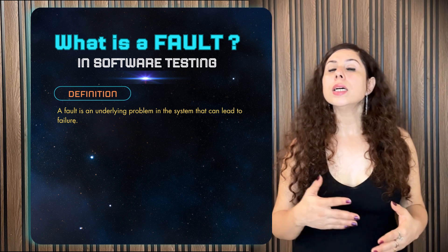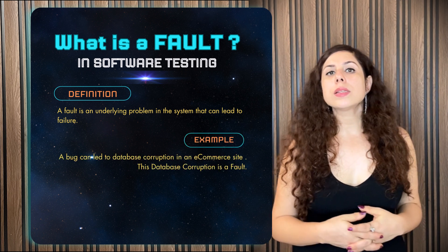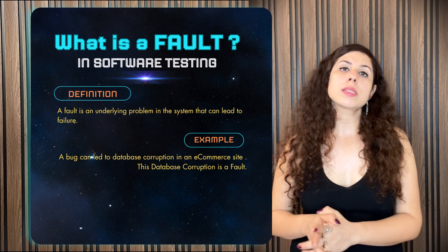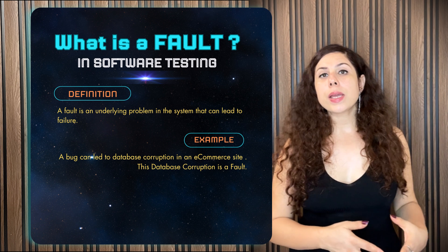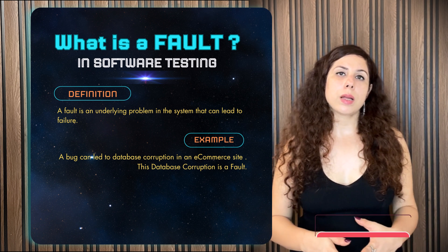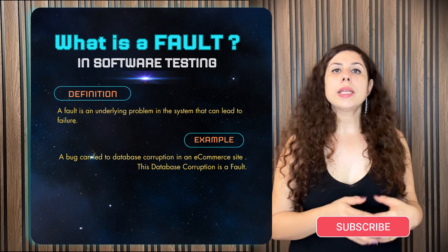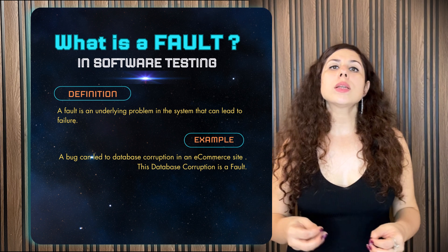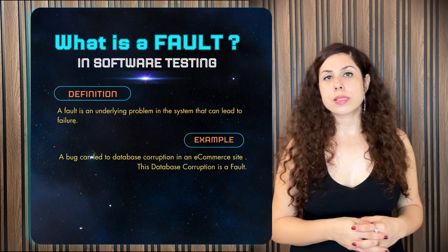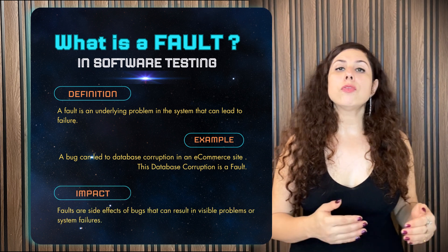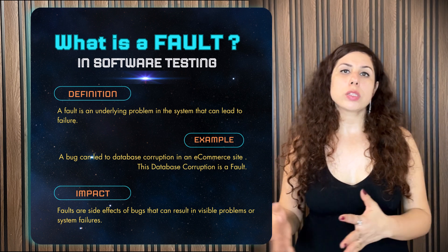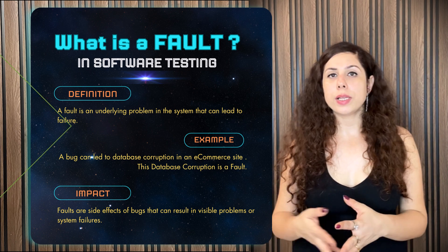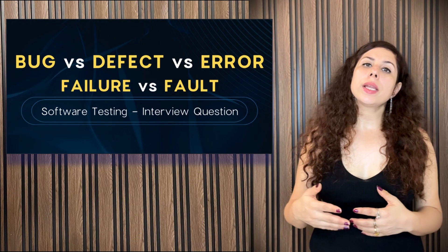Now, what is a fault? A fault is an underlying problem in the system that might lead to a failure. For example, there is a bug in the code that causes the entire e-commerce site's database to get corrupted — this database corruption is a fault. It happens because of a bug and will lead to system failure or some other unexpected results. Basically, a fault is a side effect that happens because of a bug and can result in a visible problem or failure.